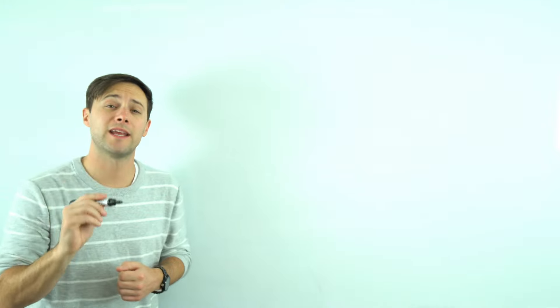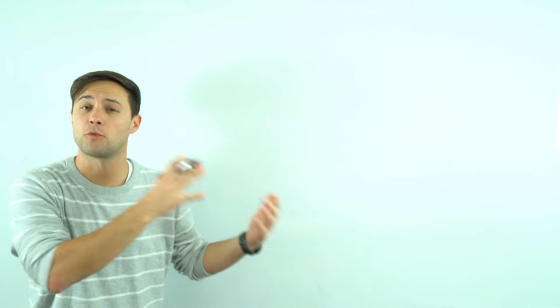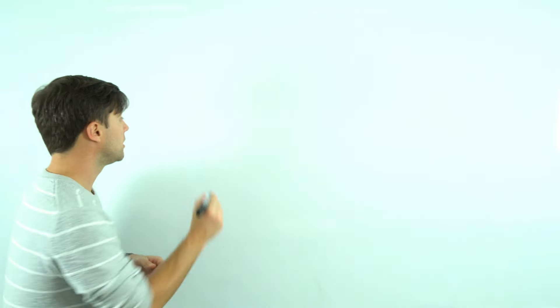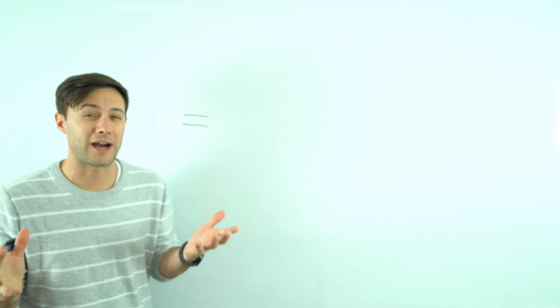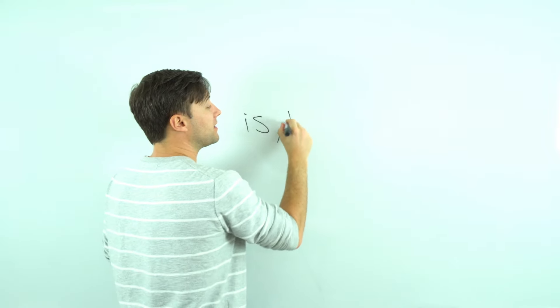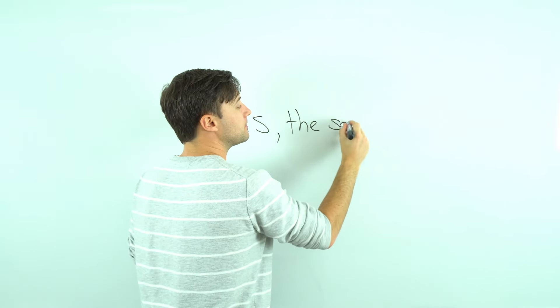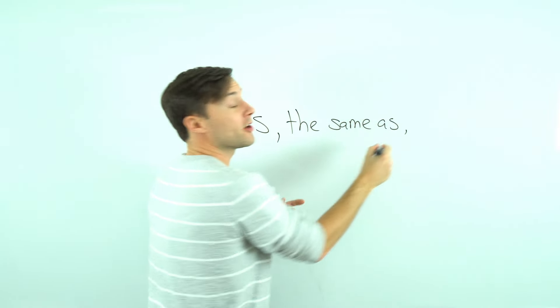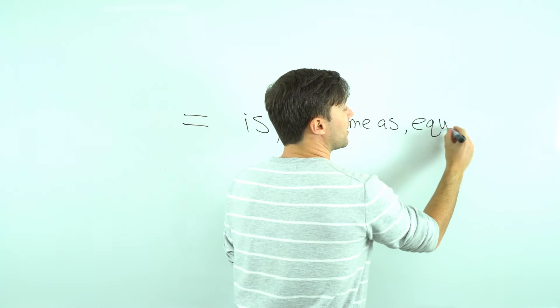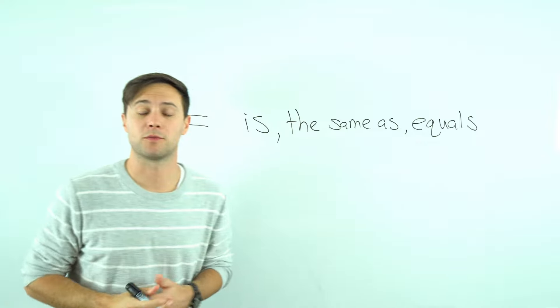When you're writing equations, same thing as writing expressions, we're looking for those key words, but now we're also looking for words that mean the equal sign. Words to watch out for are 'is' means equals, 'the same as' also means the equal sign, or just equals. That's a pretty obvious one.